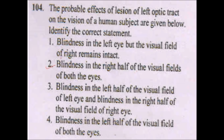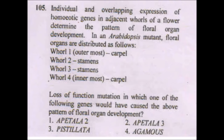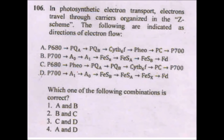Next question: individual and overlapping expression of homeotic genes in adjacent whorls of a flower determine the pattern of floral organ development. In the Arabidopsis mutant, floral organs are distributed as follows: outermost (whorl 1) is carpel, whorl 2 is stamens, whorl 3 is stamens, and innermost (whorl 4) is carpel. Loss-of-function mutation in which gene caused this pattern? The answer is APETALA2 (AP2).